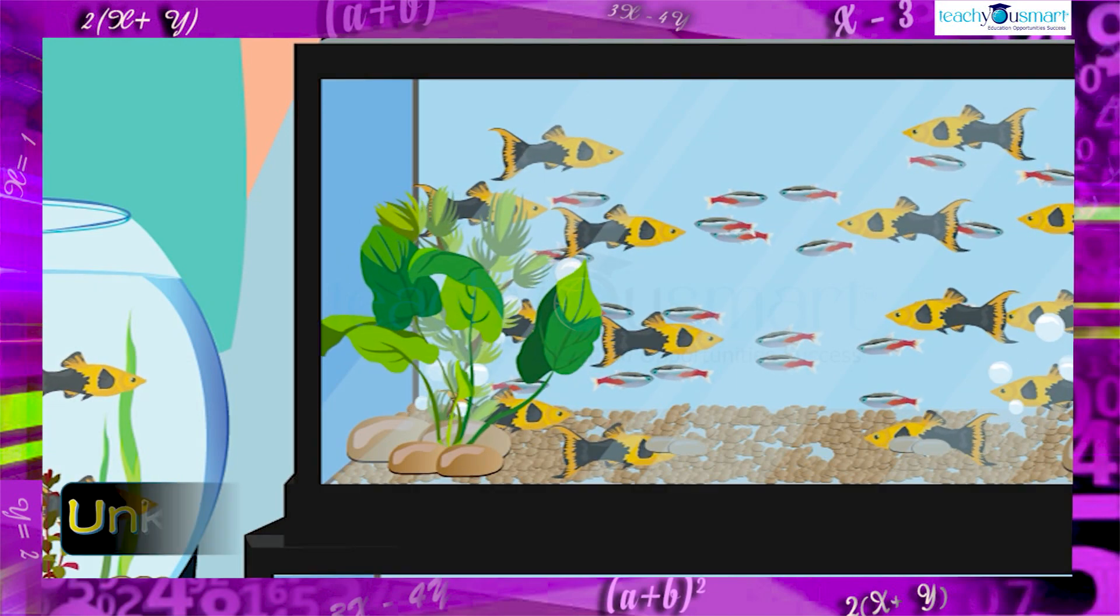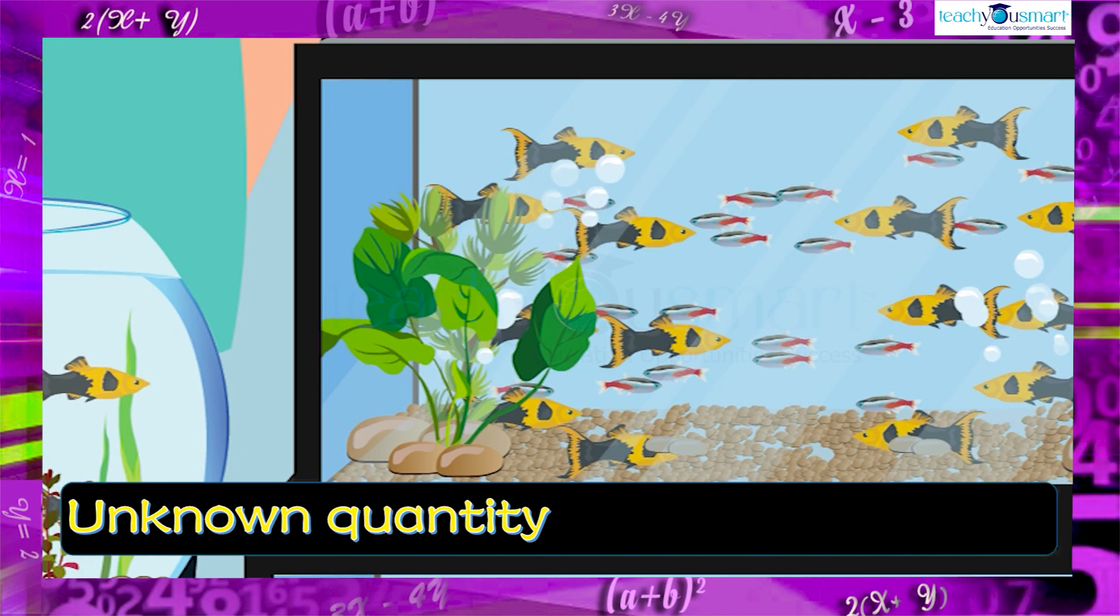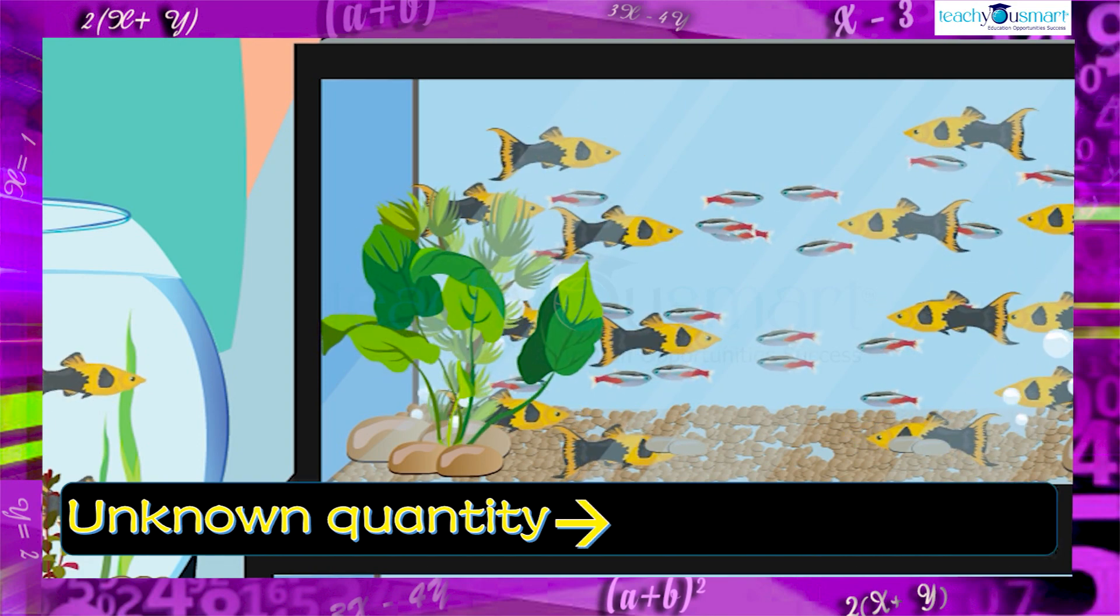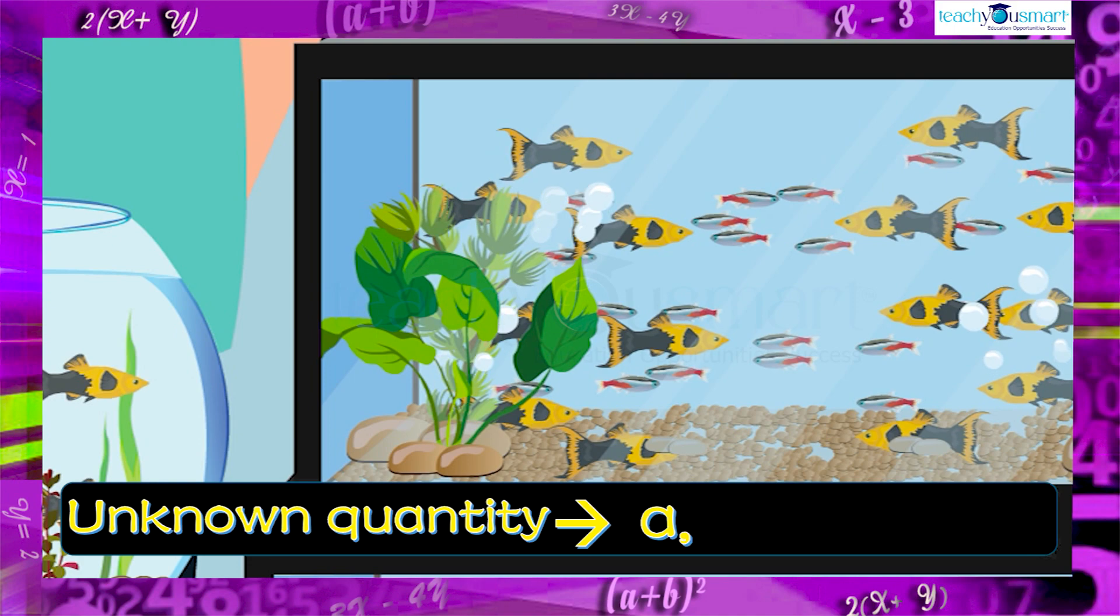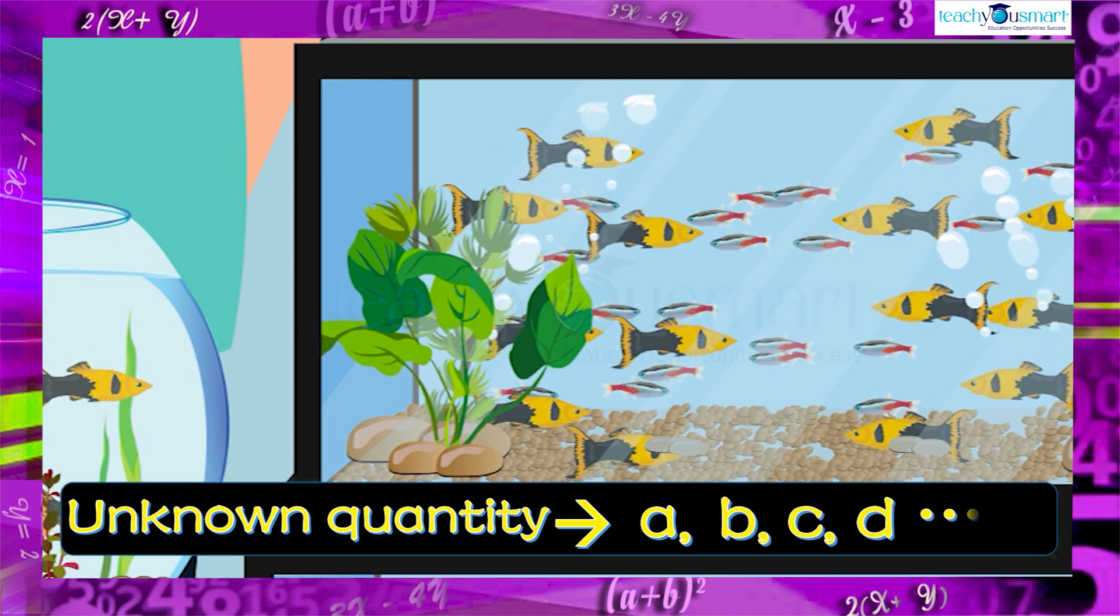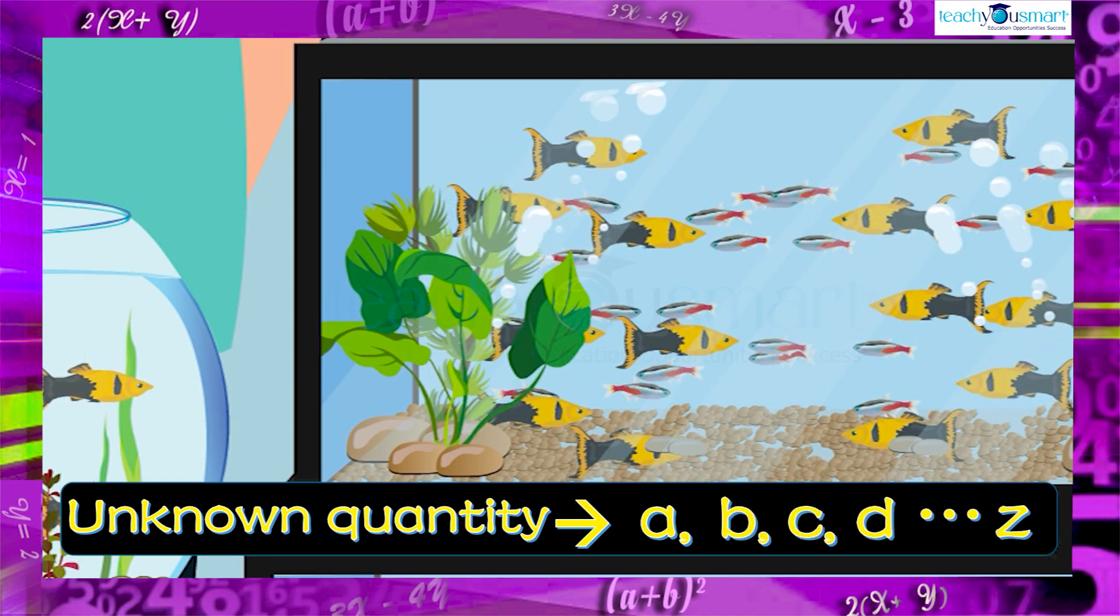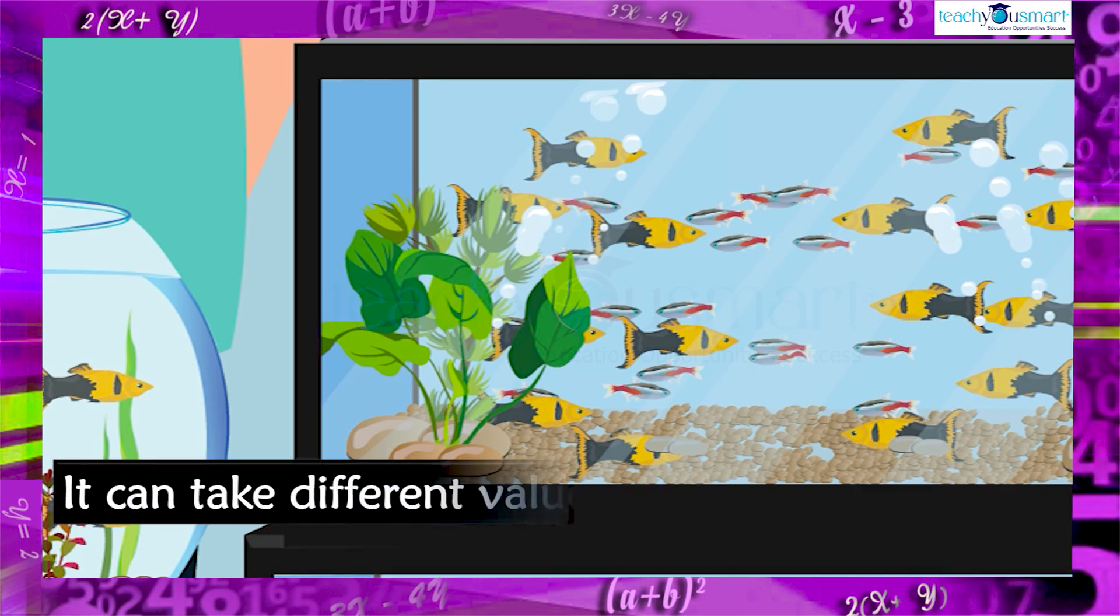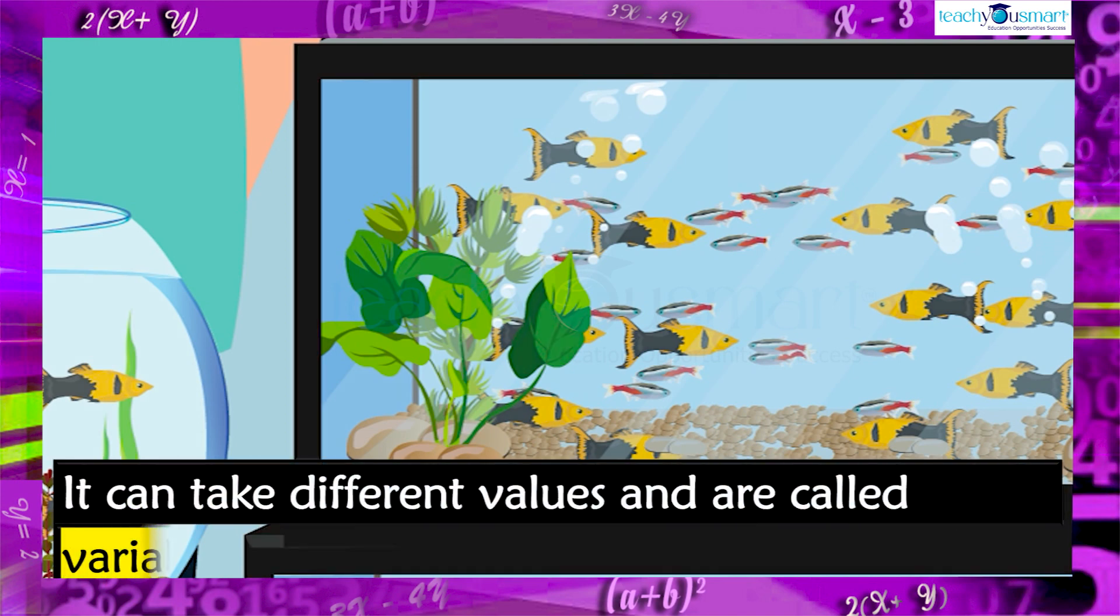That is an unknown quantity. We can represent the unknown quantity using English alphabets: A, B, C, D, et cetera, till Z. It can take different values and are called variables.